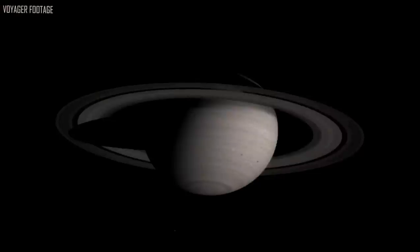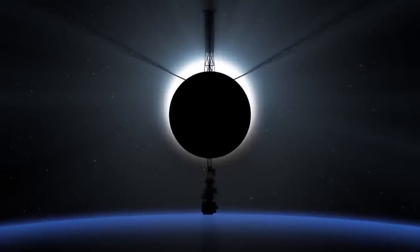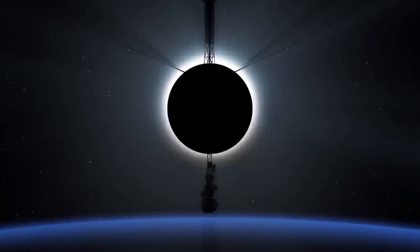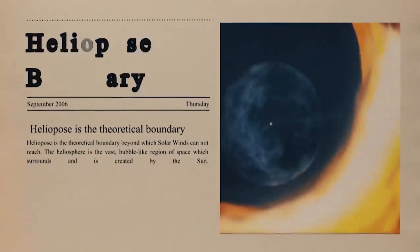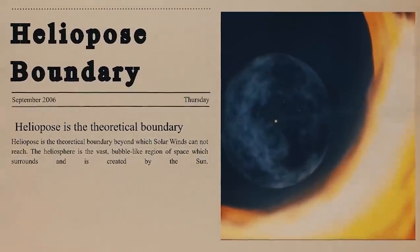Even while the Voyagers wouldn't technically be in interstellar space until they left the heliosphere, the bubble of space surrounding our sun, all the planetary contacts ended within 10 years. And on January 1, 1990, the Voyager interstellar mission formally began.